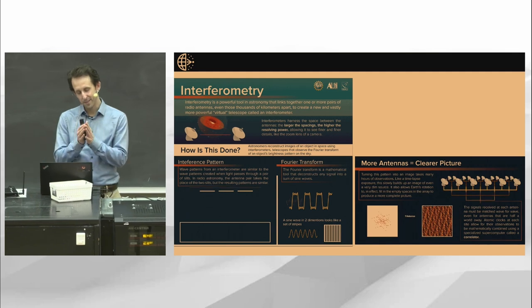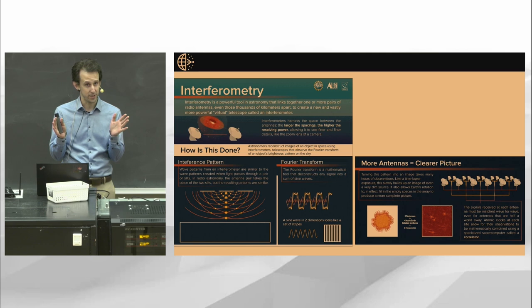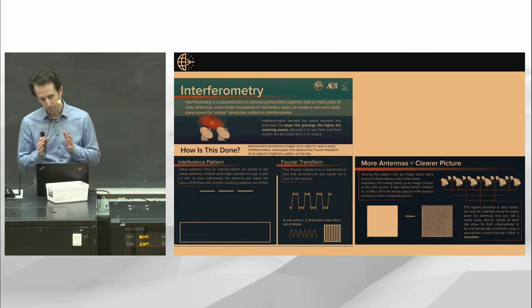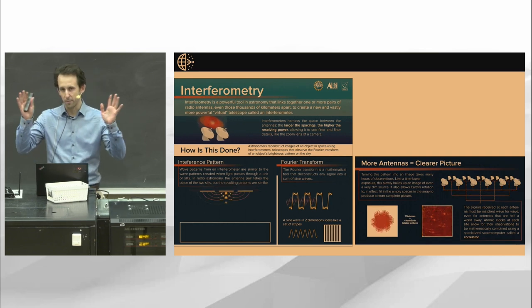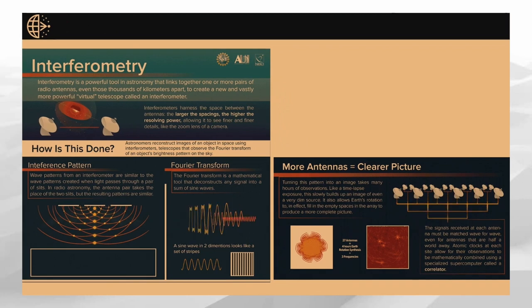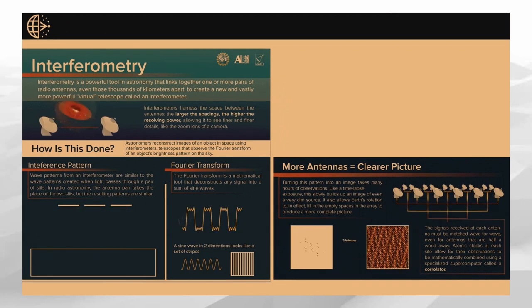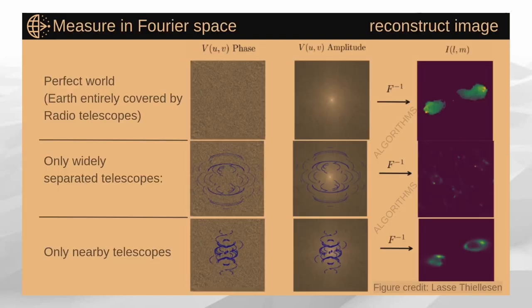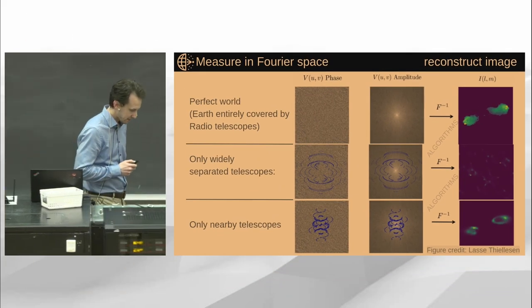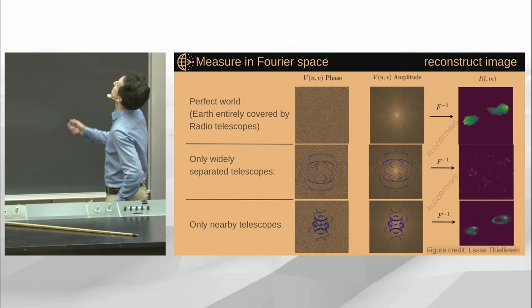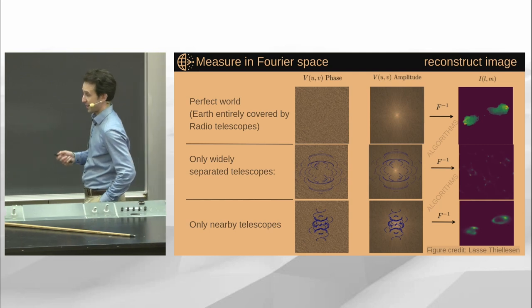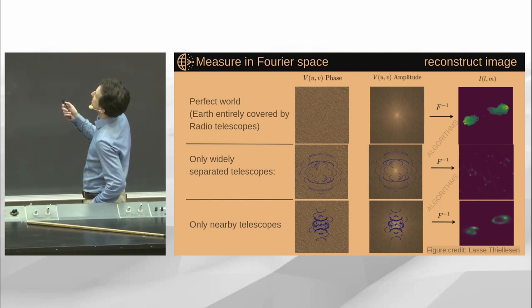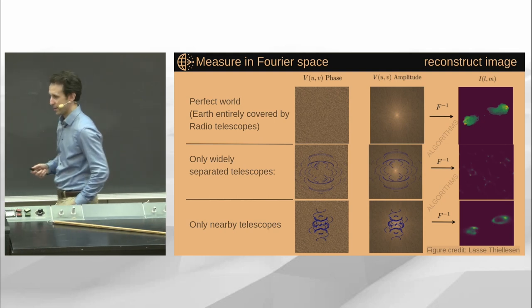Interferometry — combining light from different telescopes — is a very old idea from the 1960s. If you put these telescopes together, various telescope pairs probe different patches in the image, like a double-slit experiment, but the more antennas you have, the clearer the picture. What you see on the right is a reconstructed image using that technique. In a perfect world where all of Earth's surface was covered in radio telescopes, we would have access to all the information and could easily transform to get our image.